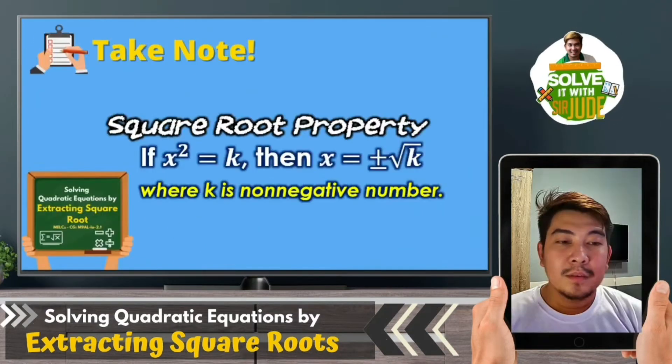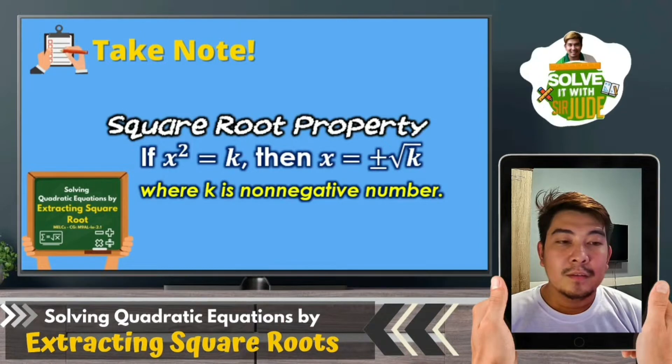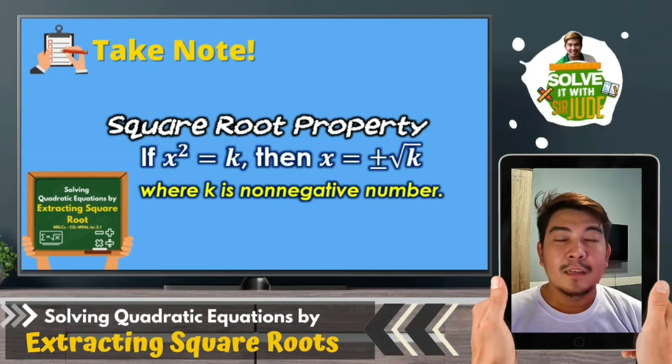The property states that if x squared is equal to k, then x is equal to positive or negative square root of k, where k is a non-negative number.